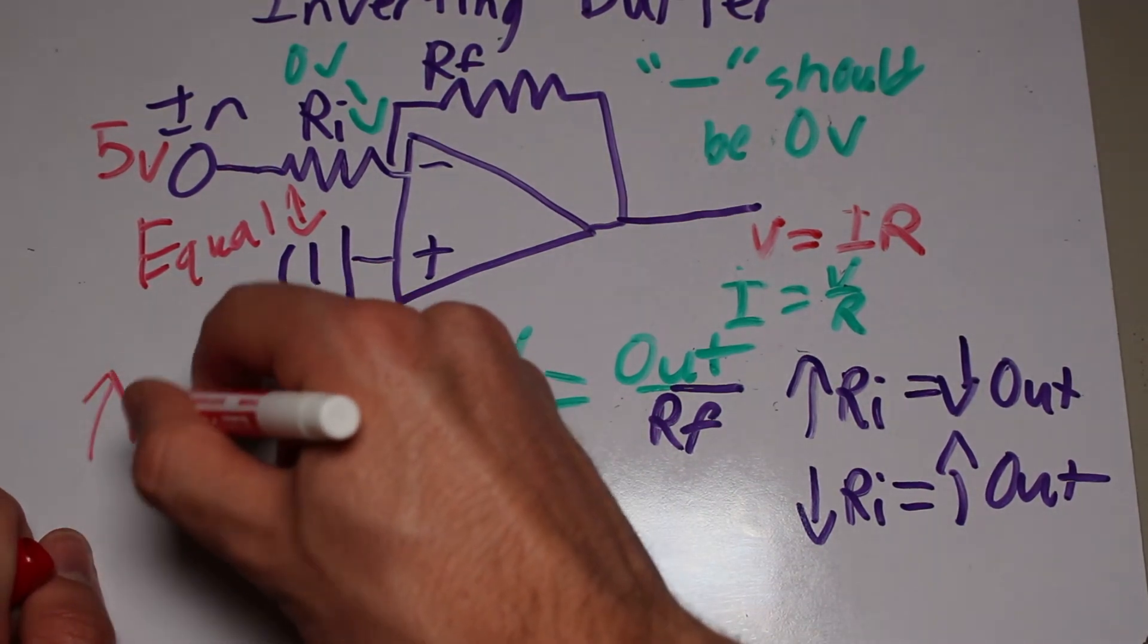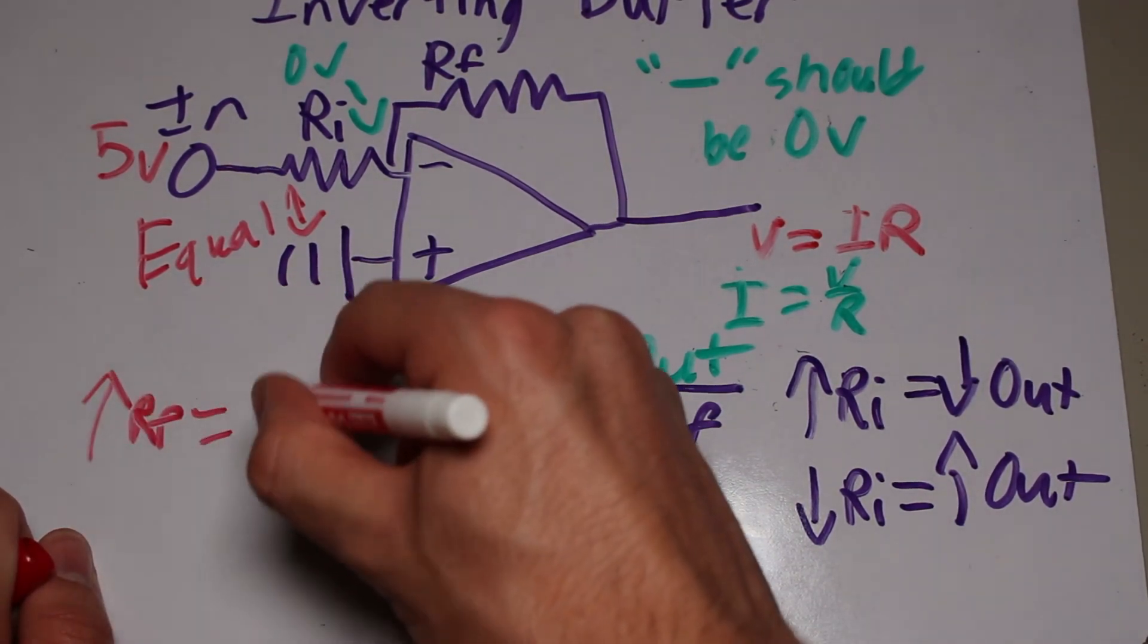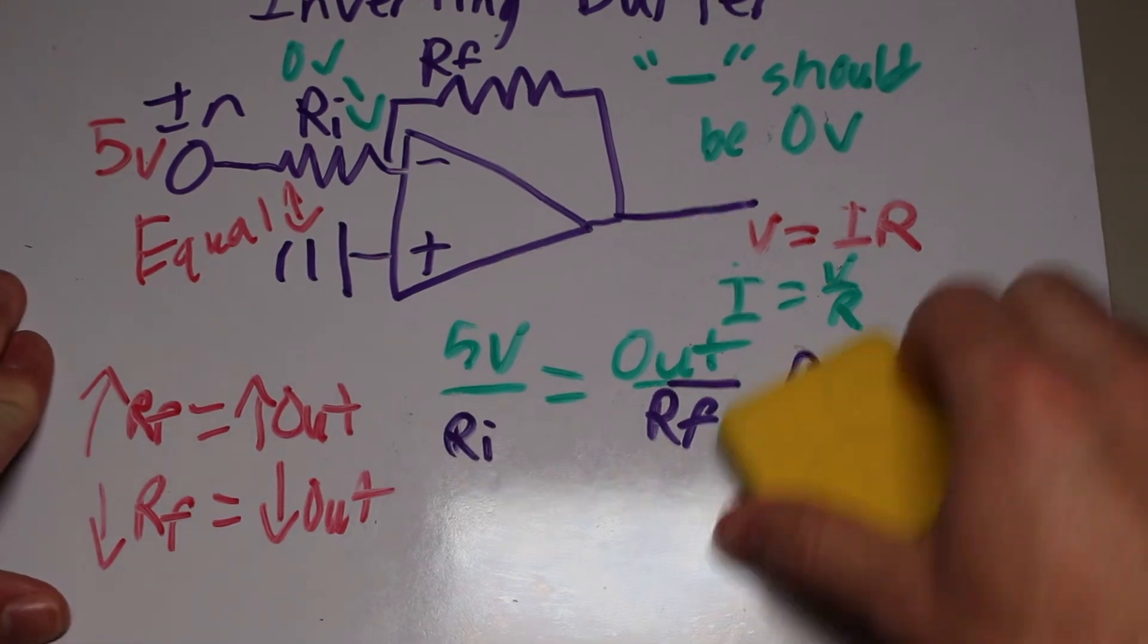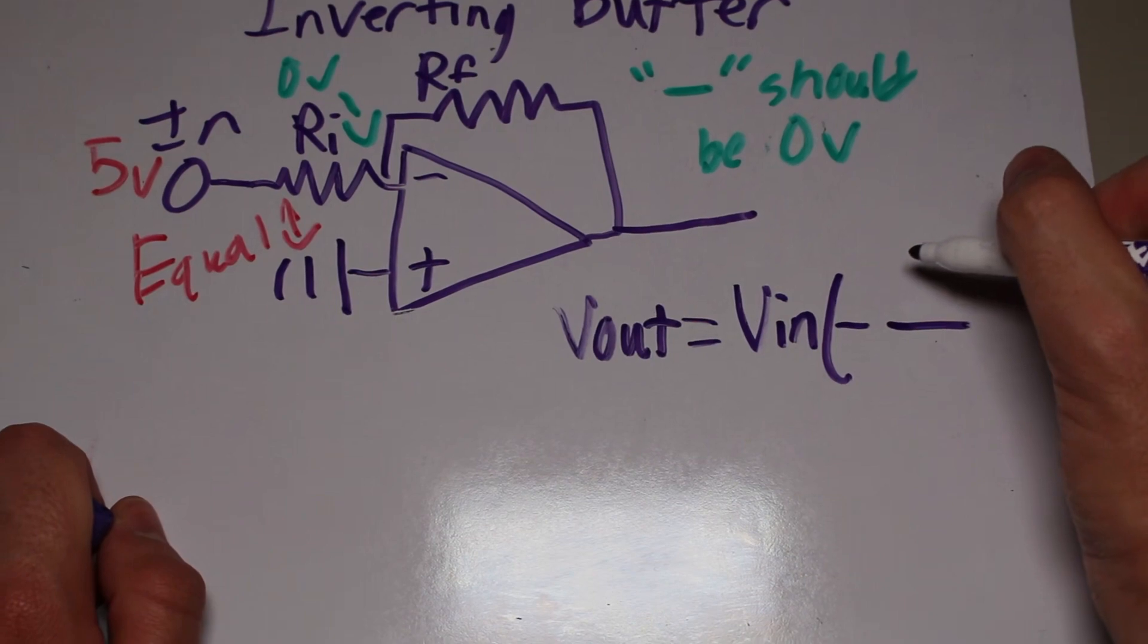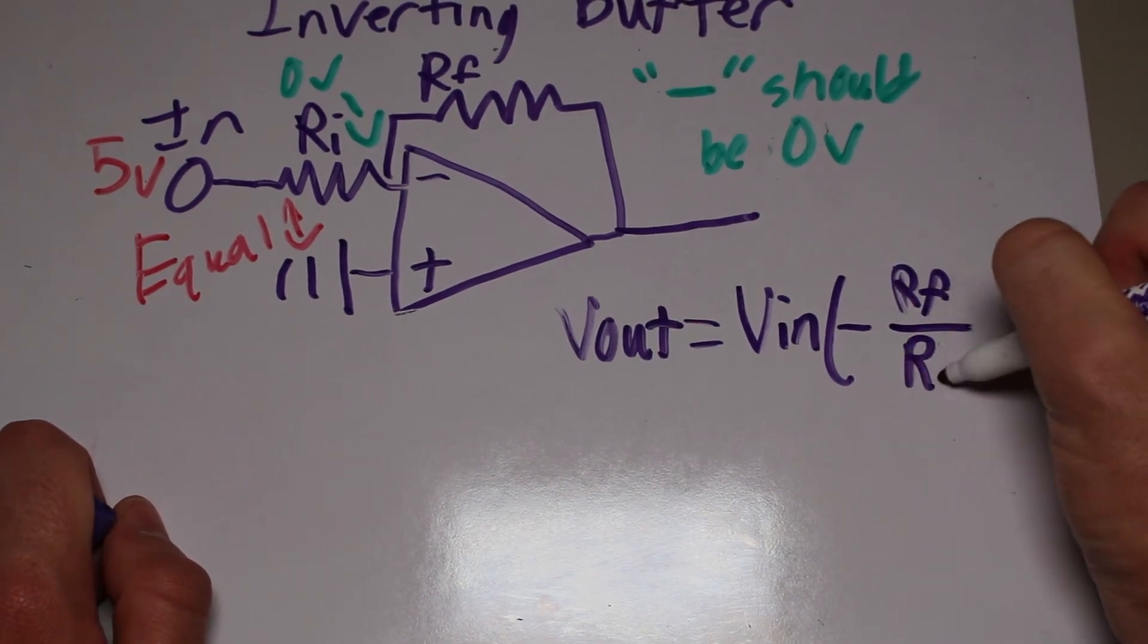As you can see, the amplification is just a ratio between the two resistors. The equation can be given by this formula. Gain equals the feedback resistor divided by the input resistor multiplied by negative 1.